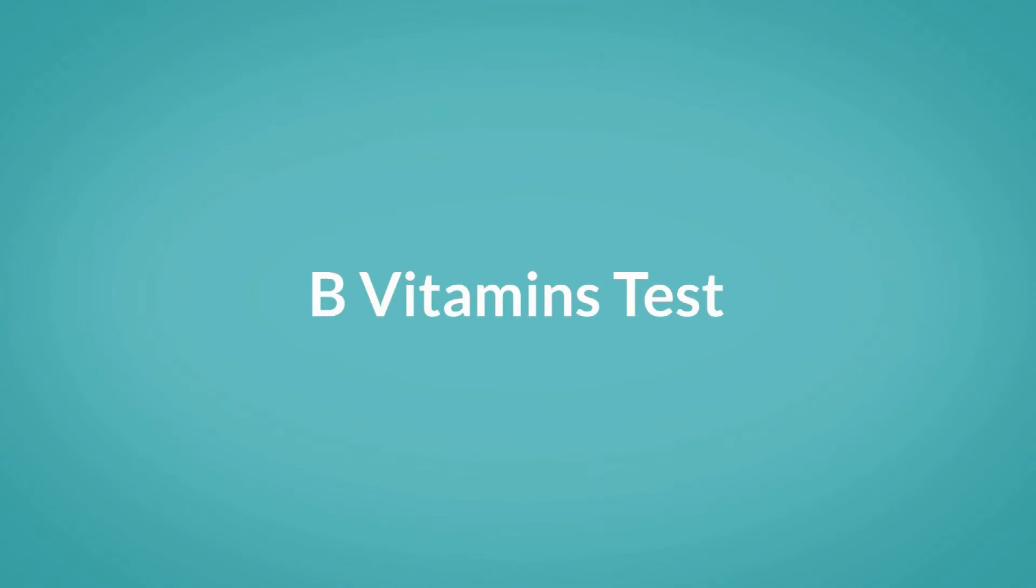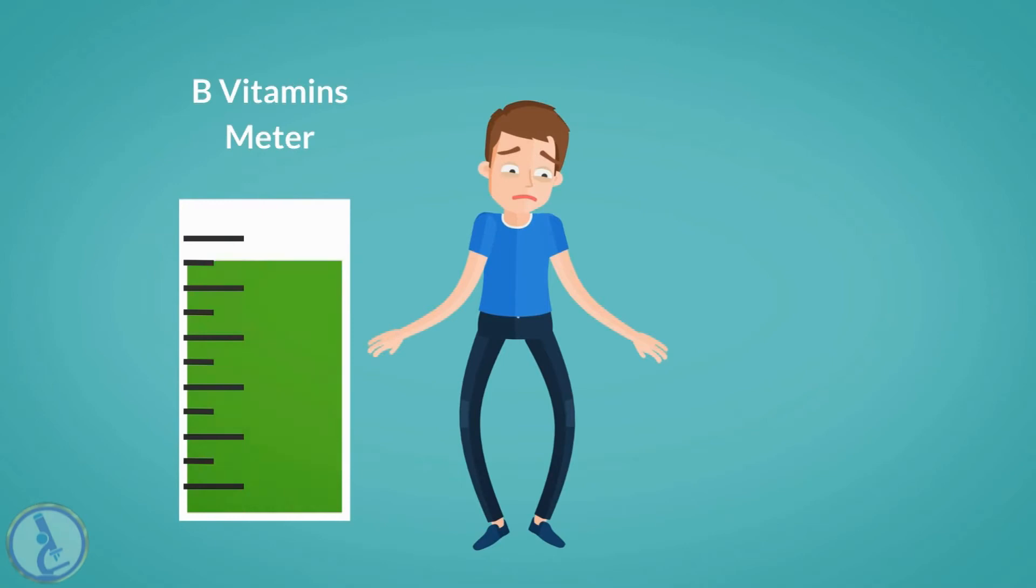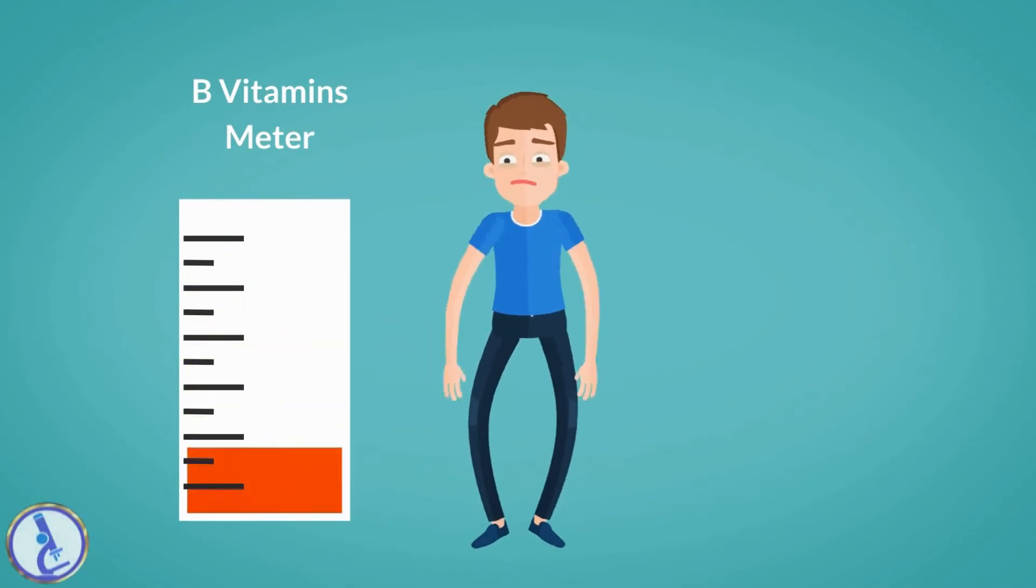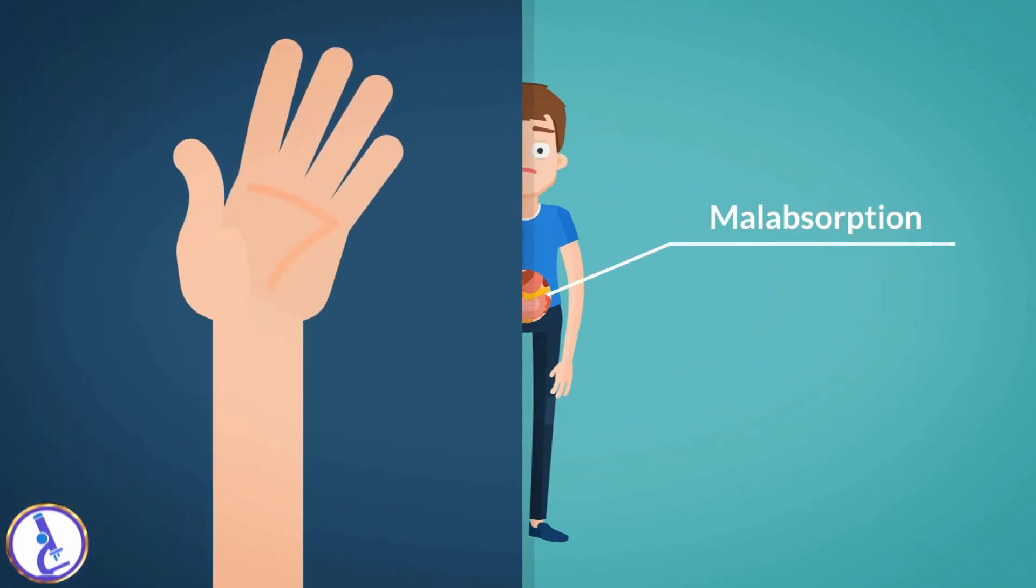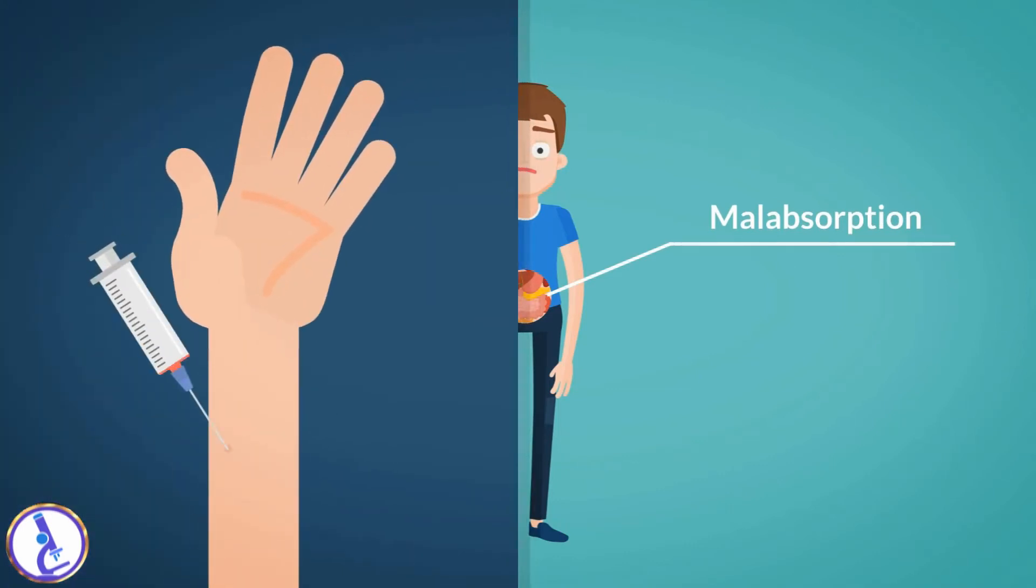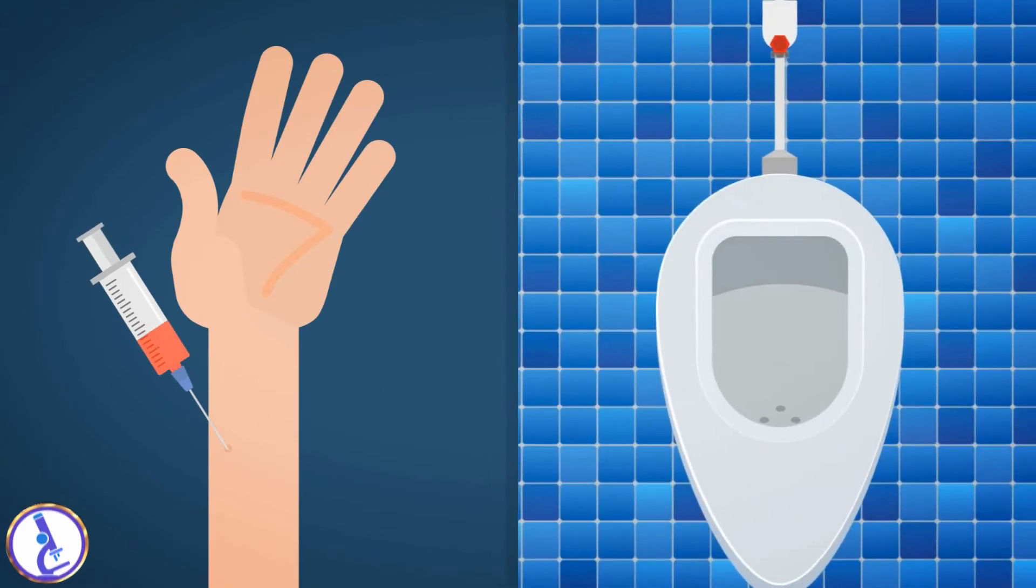B vitamins test. These tests are performed when a person has symptoms that may be due to a B vitamin deficiency or has a condition associated with malabsorption. The sample required is a blood sample drawn from a vein in your arm. A random or 24-hour urine sample may also be collected.